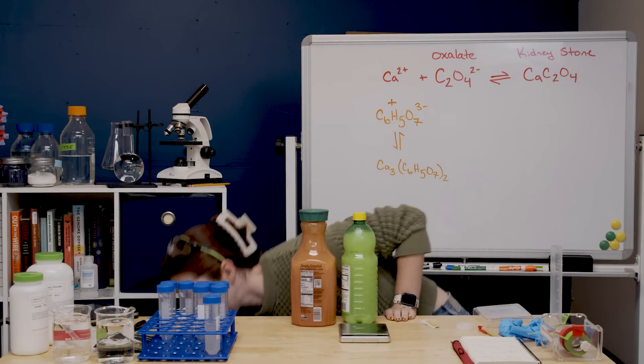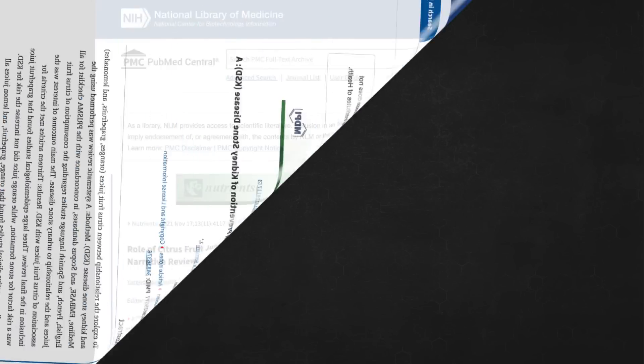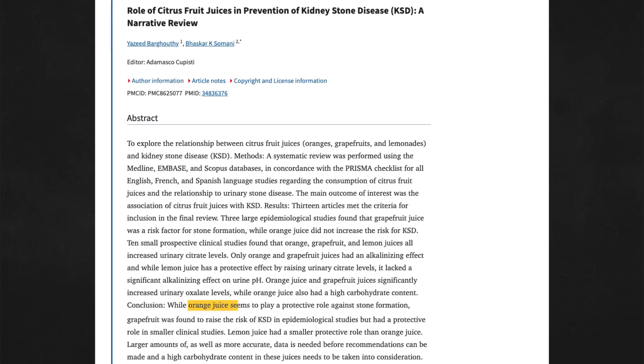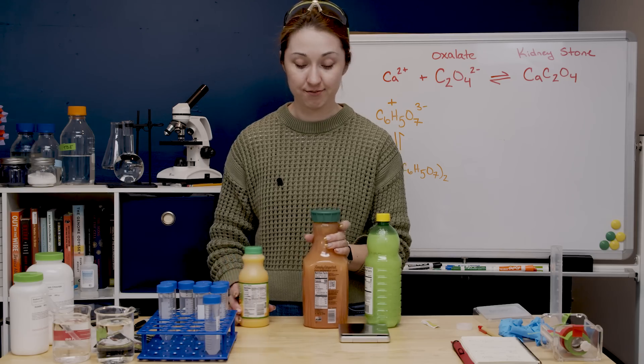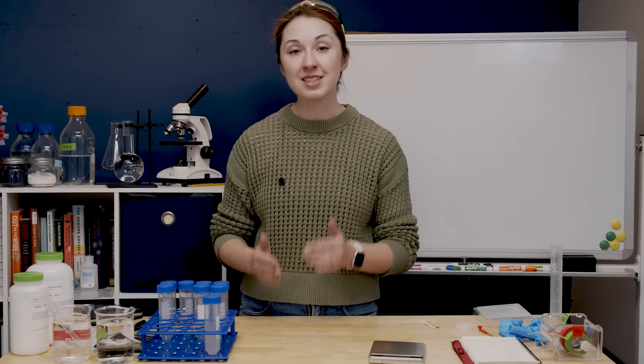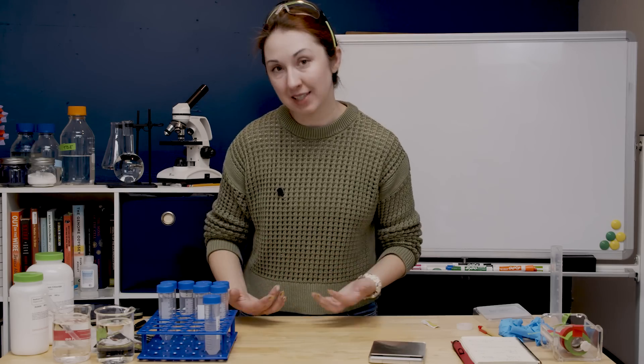But not every citrate containing juice seems to work the same way. For example in some cities orange juice seems to have the most protective effect against kidney stones. But grapefruit juice could actually increase your risk of getting kidney stones. Weird. We're gonna try all three anyways. Also remember how I said it was mostly not about the acidity?